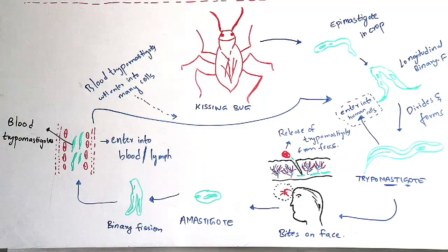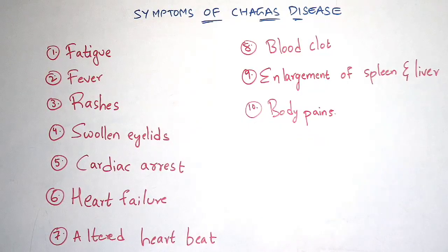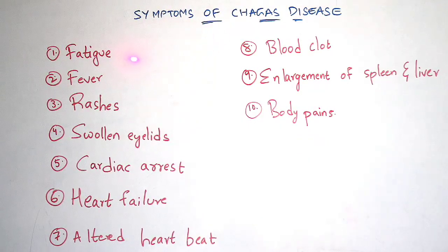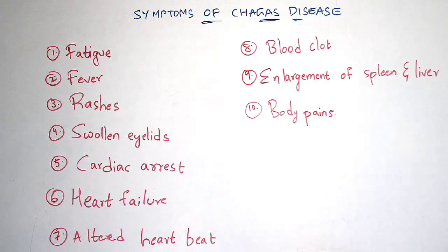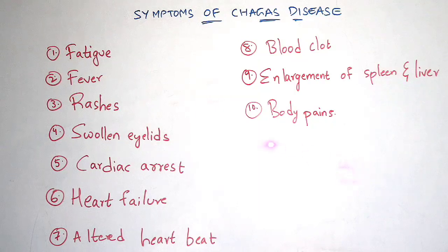Now let us discuss about the symptoms of Chagas disease. First is fatigue. Second is fever. Third is rashes, which can be seen in the forehead region, as the parasite bites at the face region. Fourth is swollen eyelids. Fifth is cardiac arrest. Sixth is heart failure. Seventh is altered heartbeat — there will be a change in heartbeat. Eighth is blood clot. Additionally, enlargement of spleen and liver, and body pains.